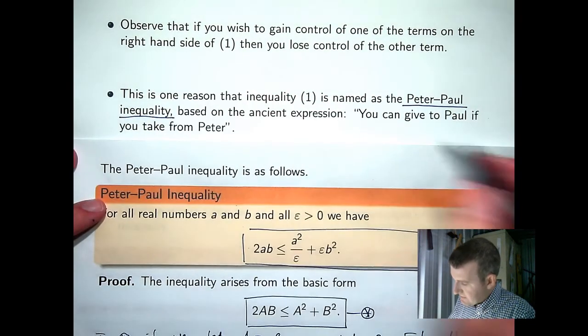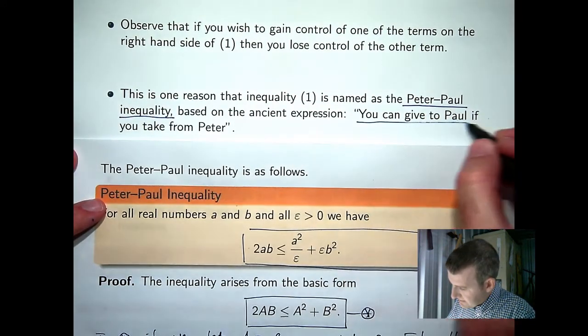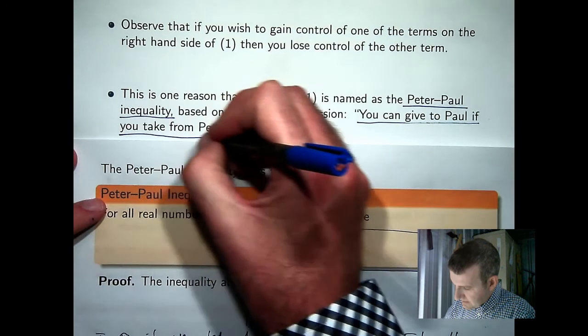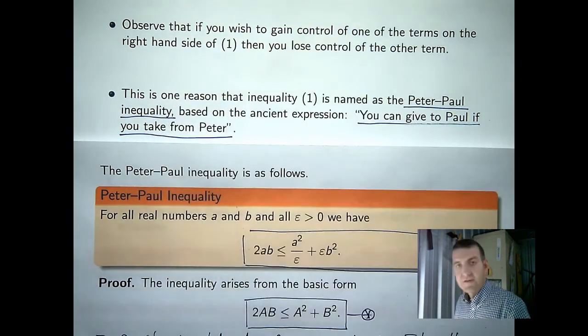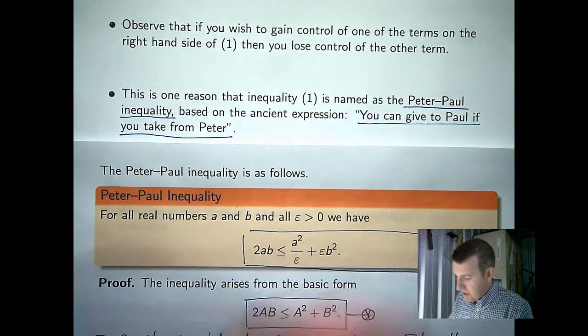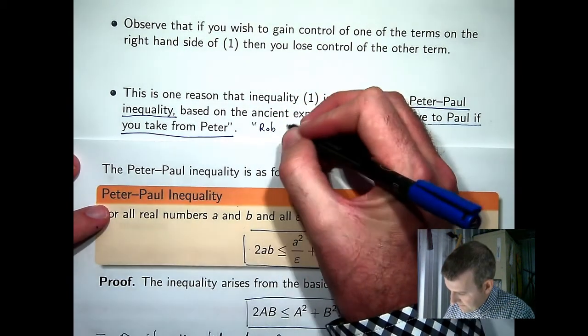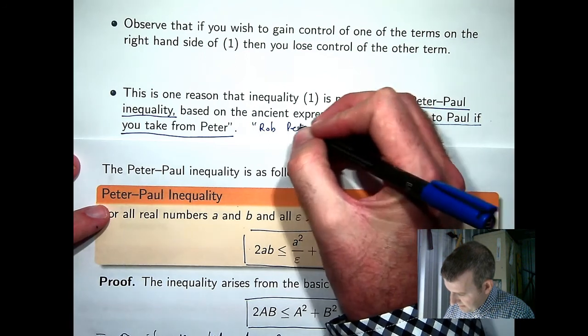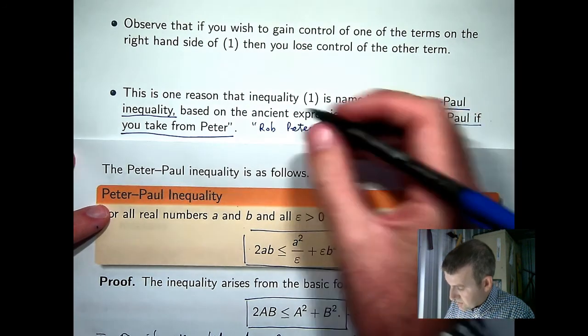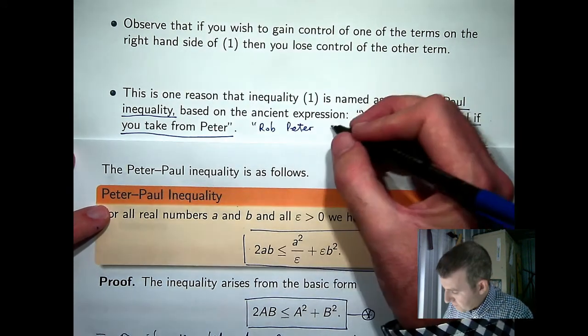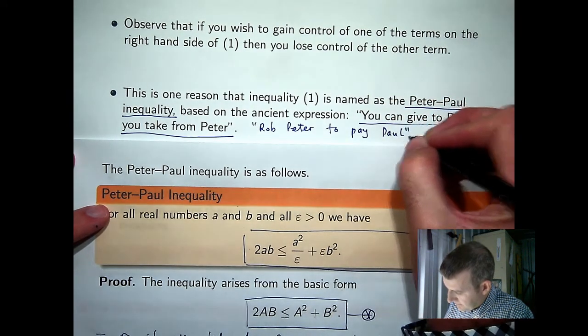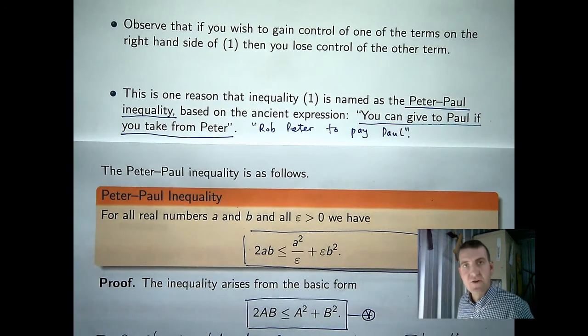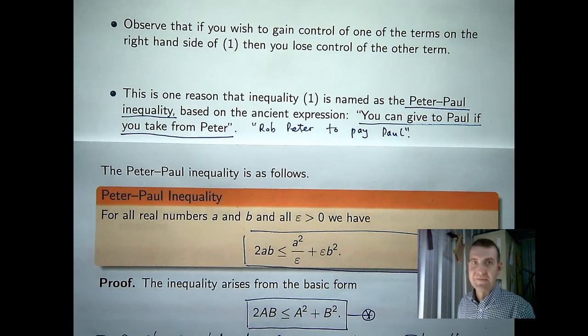Now, there is an ancient expression, you can give to Paul if you take from Peter. Or perhaps another shortened or more popular version is Rob Peter to pay Paul. If you want to satisfy one thing, you have to give up on another thing.